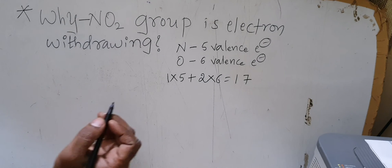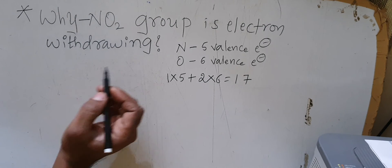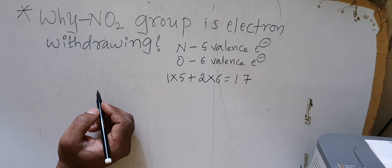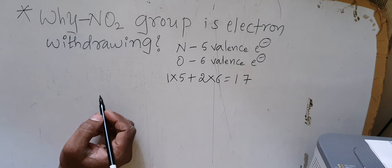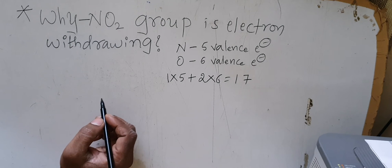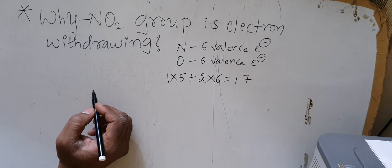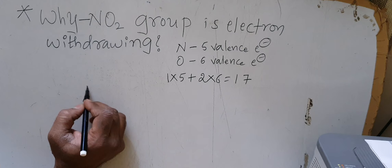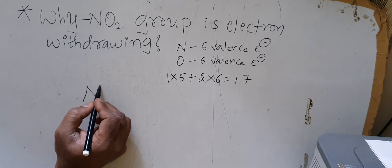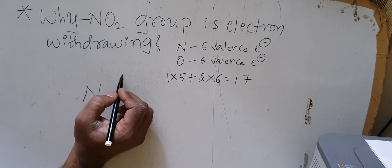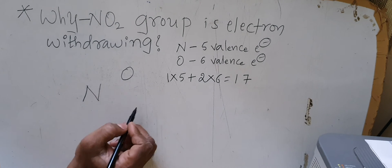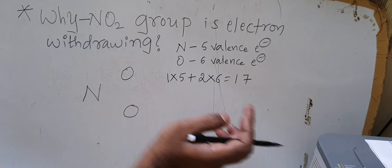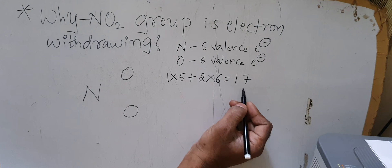By using these 17 valence electrons I am supposed to write the Lewis structure for this nitro group. We need a central atom — I am going to choose nitrogen because it is the less electronegative atom, and the less electronegative atom is chosen as the central atom. I place nitrogen in the center and put one oxygen atom on each side.